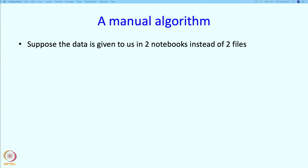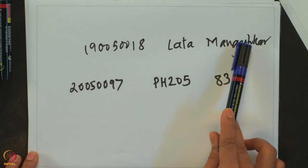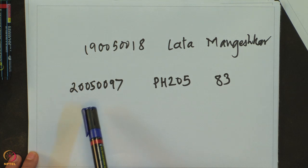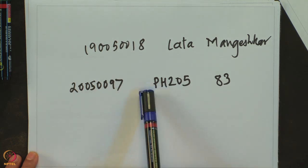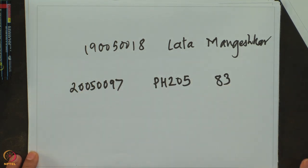So let us think about solving the problem manually first. Suppose the data is given to us in two notebooks instead of two files. What appears in the first notebook is lines of the form: role number followed by name. In the second file, we are expecting to see role number followed by subject code followed by marks. So instead of files, let us say they appear in notebooks so that we can think of a manual algorithm.